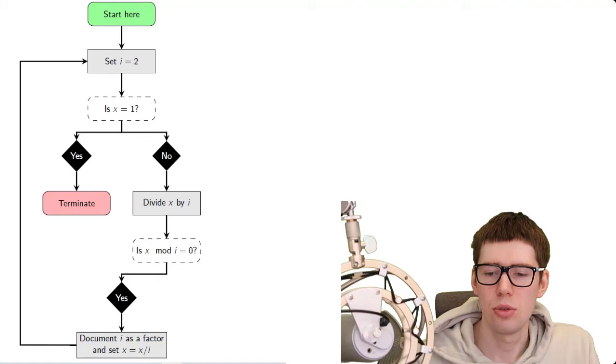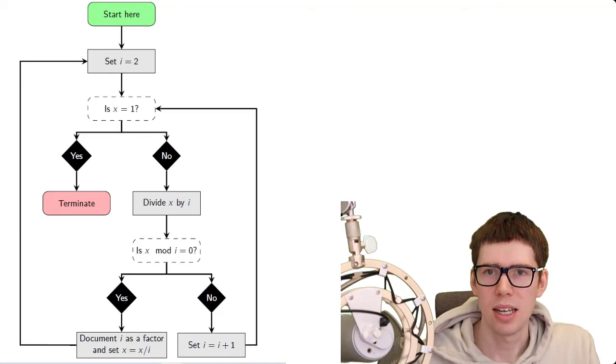However, if the answer to whether or not x mod i is equal to 0 is no, then that means that i was not a factor of x. In that case, we need to increment i by setting i equal to i plus 1. And we loop back up to the top, or almost to the top, where we ask ourselves is x equal to 1. And that is the entire algorithm.